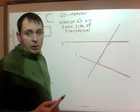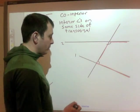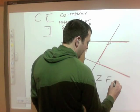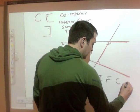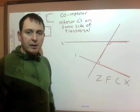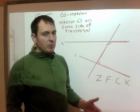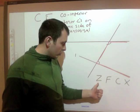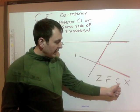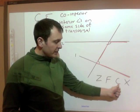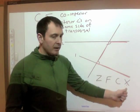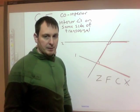So now we've seen them all. It's important that you look for Z's, F's, C's, and X's. You should be taking notes on: alternate interior, corresponding, interior on the same side, and vertically opposite.